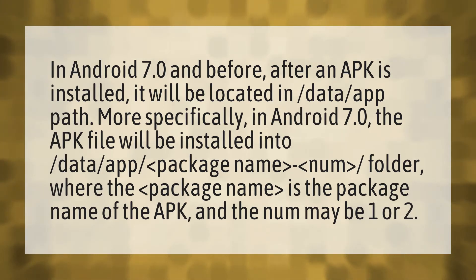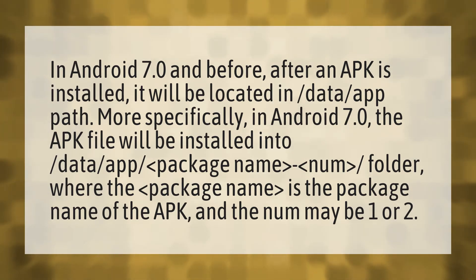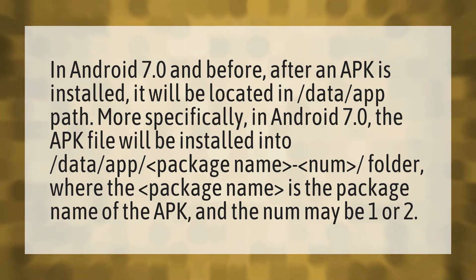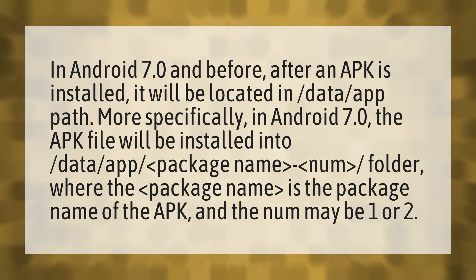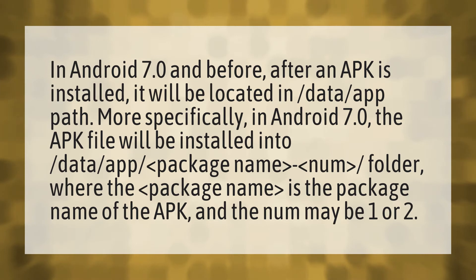in Android 7.0, the APK file will be installed into the /data/app/<package_name><num>/ folder, where <package_name> is the package name of the APK and the num may be one or two.